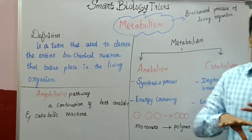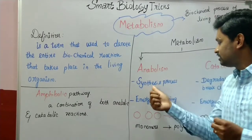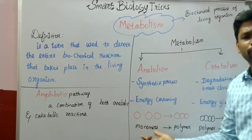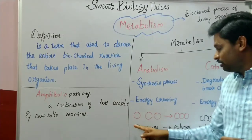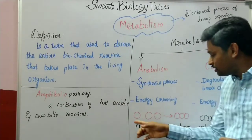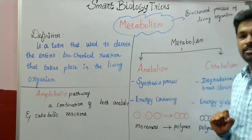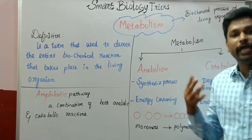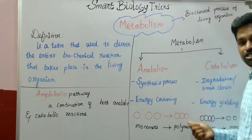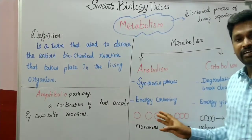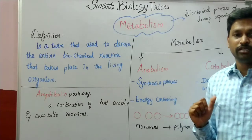Anabolism is a synthesis process where large molecules are created from small molecules. For example, individual monomers are joined together to form a polymer. Upon doing so, ATP energy molecules are utilized for the synthesis of these large polymer molecules. Energy is invested in this process, making anabolism an energy-consuming phase of metabolism.